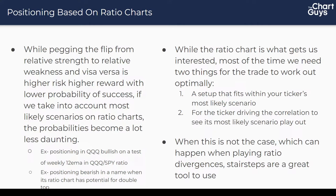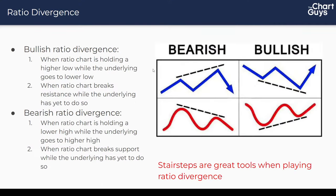When you're not getting the most likely scenario on the ticker driving the correlation, stair steps are a great tool to use — and this is often the case with ratio divergences. A bullish ratio divergence is when the ratio chart holds a higher low while the underlying goes to a lower low. If you're trying to play this, it can be difficult because the chart you're playing just broke support, but you know it has relative strength because the ratio is holding a higher low. A good way to nail that bottom just after breaking support is a stair step or smaller time frame trend change.